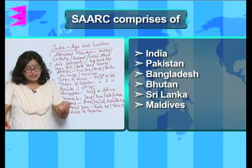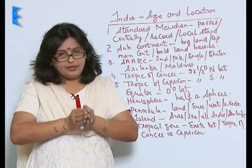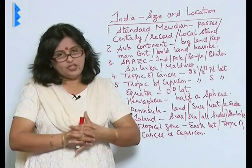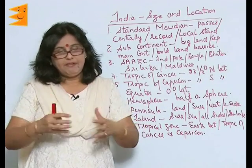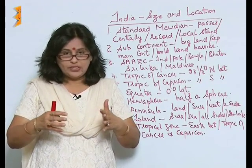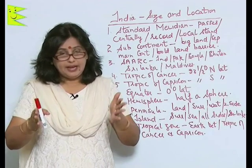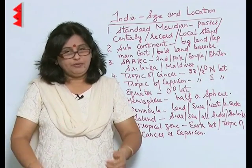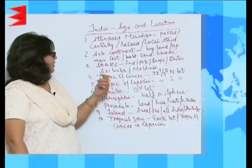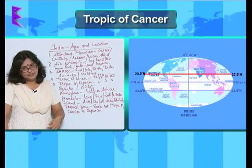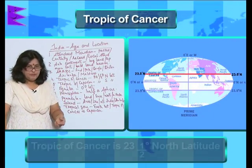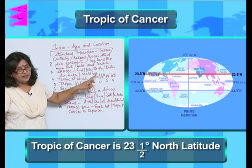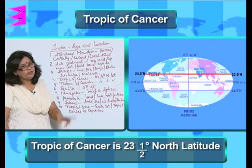These countries have come together in order to have peace in the Asian continent, for development, and also to see that people can actually live in cooperation with each other. Then we have the Tropic of Cancer — the Tropic of Cancer is 23 and a half degrees North latitude.